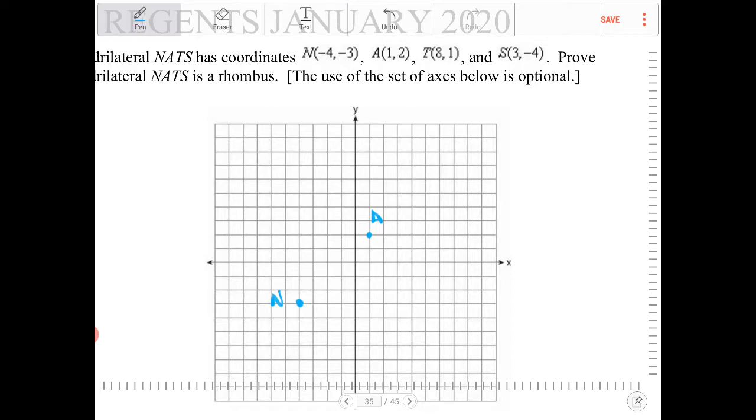And T is 8, 1. So 2, 4, 6, 8. This is T. And S is 3, negative four. So 3, negative four is right here. Okay.